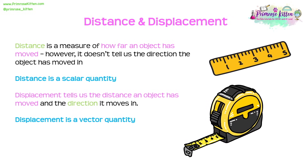In physics, distance and displacement are used often, but there is an important difference. Distance is a measure of how far an object has moved, but gives no information about direction — making it a scalar quantity. Displacement, on the other hand, tells us the distance an object has moved and also the direction it has moved in, making it a vector quantity.